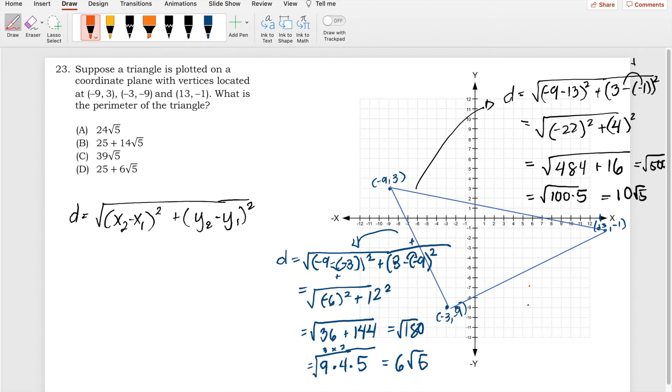So the last side, we have a distance of 13 minus -3, quantity squared, and -1 minus -9, quantity squared. And if you add that, that would be 16, 16 squared plus 8 squared.